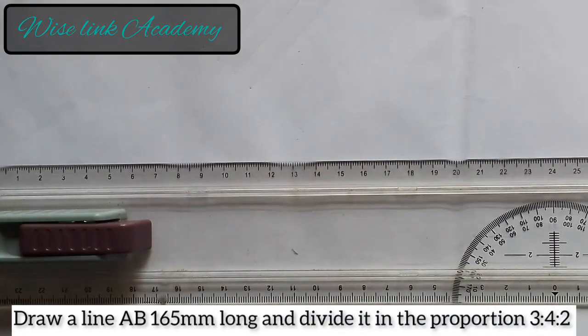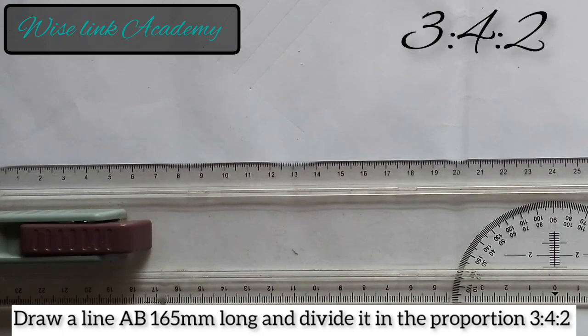The question goes: Draw a line AB 165mm long and divide it in the proportion 3 ratio 4 ratio 2.